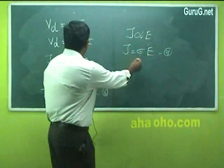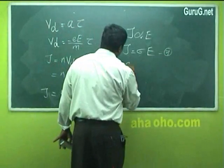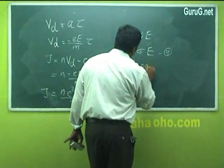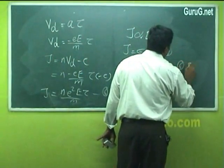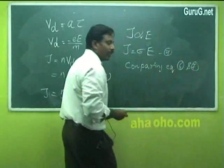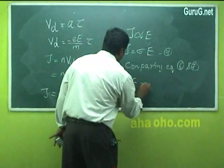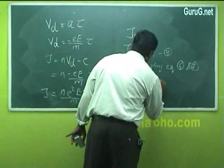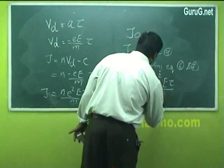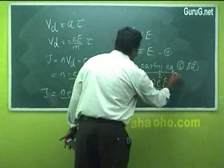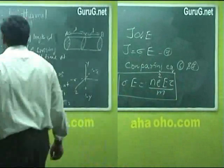Comparing equations 6 and 7, we get σE = Ne²Eτ / M. Therefore, σ = Ne²τ / M. This is the expression for electrical conductivity of metals.